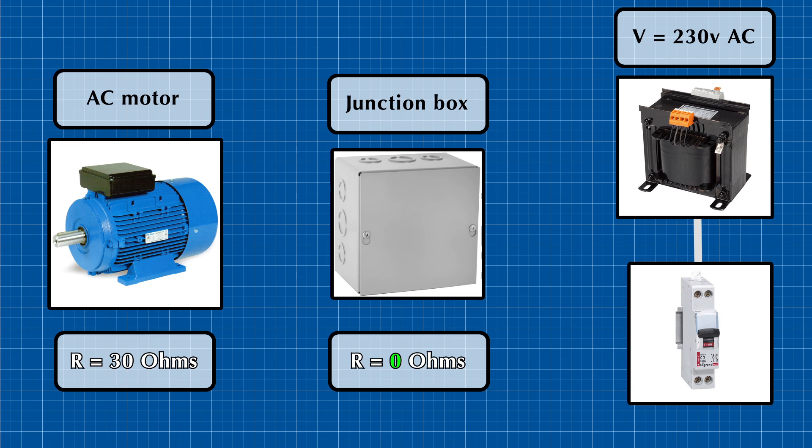When you have a 230 volts AC supply wired to a junction box then to an AC motor which has a resistance of say 30 ohms, that means the current flowing in the circuit is around 7.6 amps according to Ohm's law. The junction box connection is 0 ohms because it is just a connection and it is tightened well.